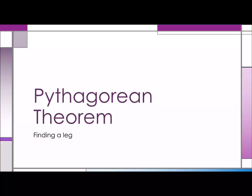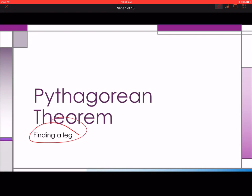So we have started our unit on the Pythagorean Theorem. Previously we found the length of the hypotenuse, today we are finding a leg.